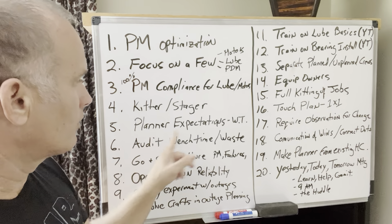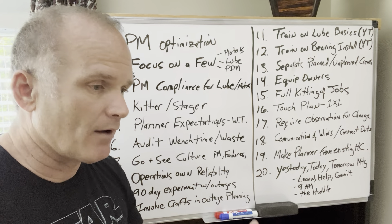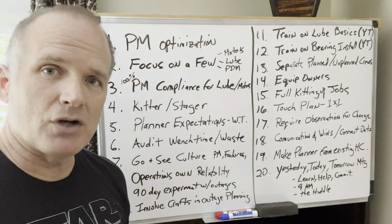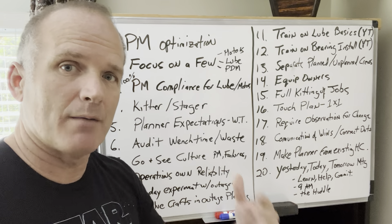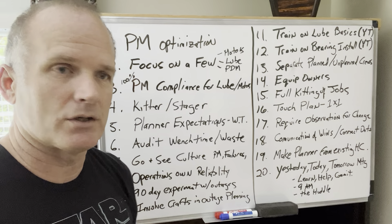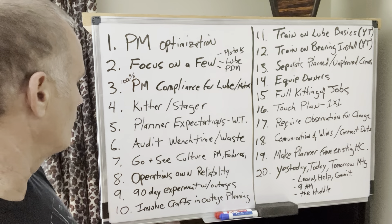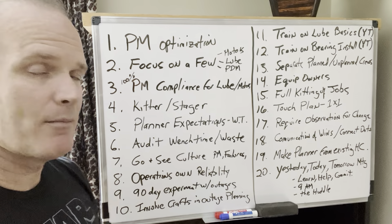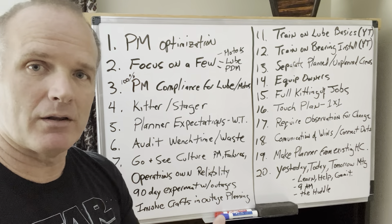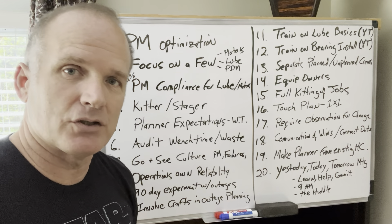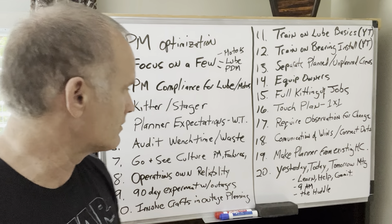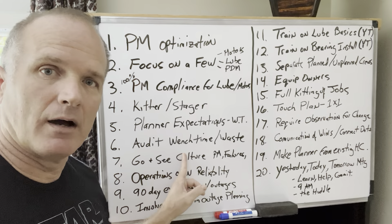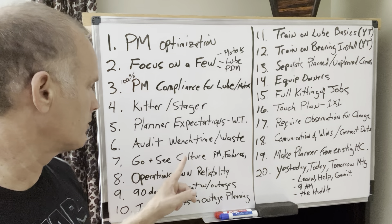Number five: create expectations of your planners. Tell them their job is to anticipate wrench time detractors — how to make the job go more efficiently just by thinking it through. Very easy to do; that's a piece of paper. Number six: audit wrench time and waste. Make it part of expectations to go out and see how efficient your crews are. See problems and waste they have to deal with. This never has anything to do with work ethic — it's all your system that they're working in.